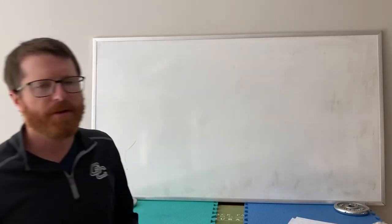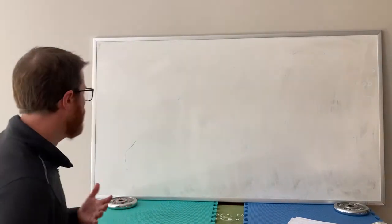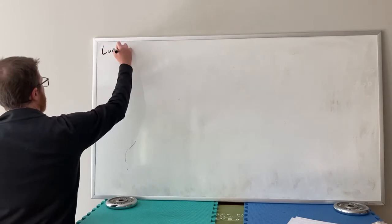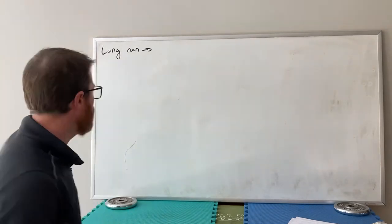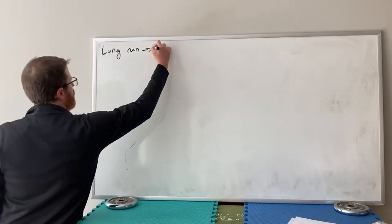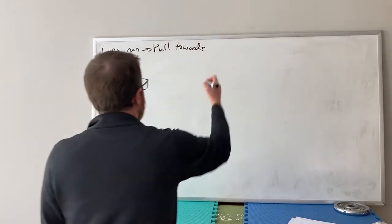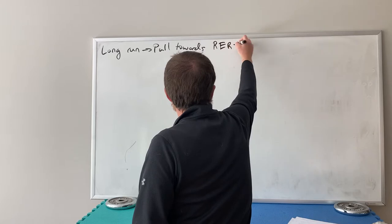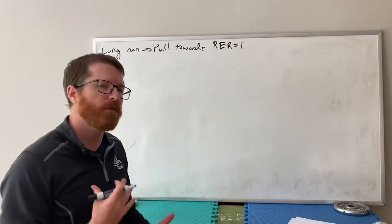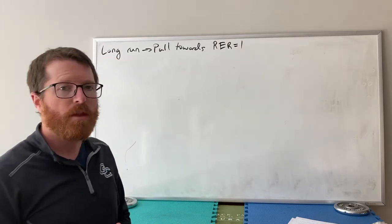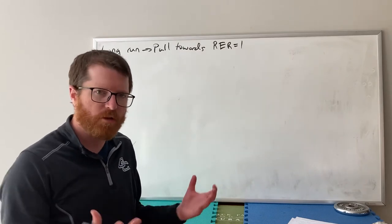Let's now transition from thinking about exchange rates in the long run to thinking about them in the short run. What we've learned so far, among other things, is the general pull towards the real exchange rate equaling one. We talked about how this might occur for individual goods — the law of one price — and then for a basket of goods, the cost of living, and how that would generally trend towards one.